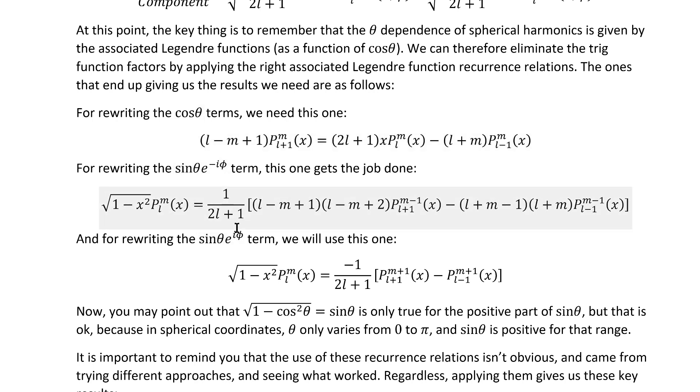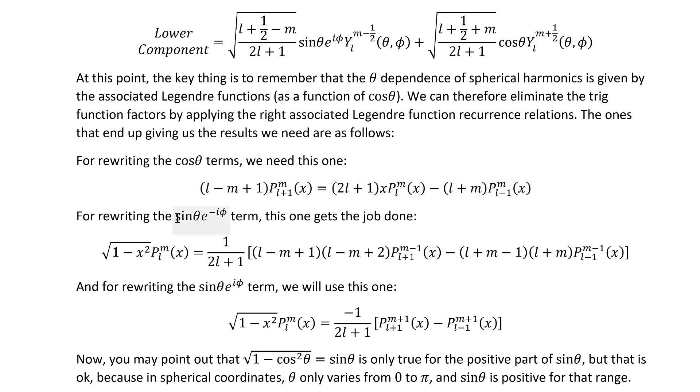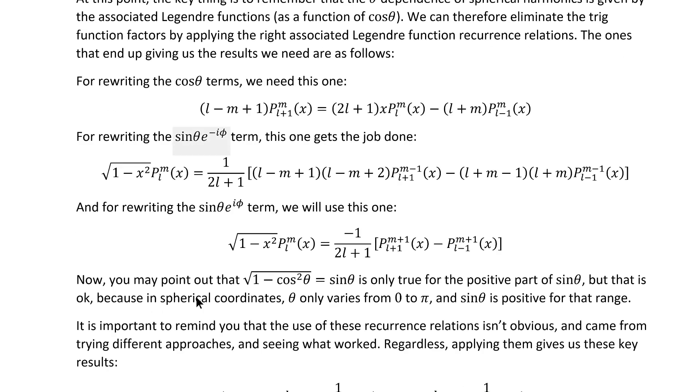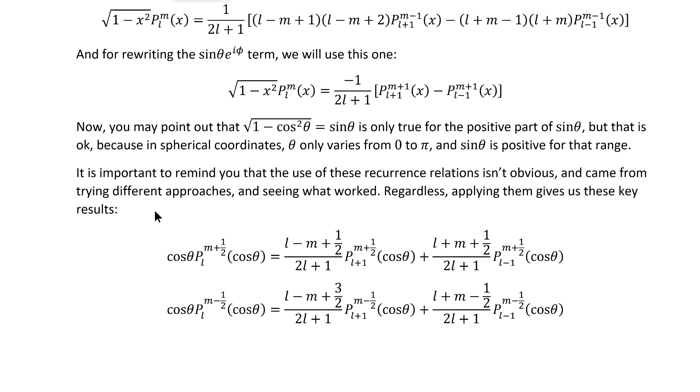Now, this e to the i phi, or e to the minus i phi dependence, has nothing to do with the cosine theta dependence, but it turns out that applying a different recurrence relation to the two cases anyway ends up being necessary to get it to simplify down right. Now, you may point out that this relation is only true when sine theta is positive, and yeah, you're right, but in spherical coordinates, theta only varies from 0 to pi, and sine theta is positive for that, so we're clear to use these two recurrence relations without thinking about it further.